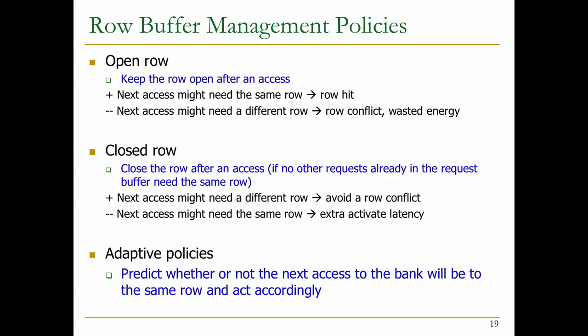Adaptive policies try to predict whether or not the next access to the bank will go to the same row and act accordingly. If the prediction is that it's going to the same row, they keep the row open; otherwise, they close the row. These are implemented in existing memory schedulers, though there's not a lot of literature that really talks about it. Many memory controller designers implement a timeout — if the row buffer is open for too long, they close it to save energy. A prediction-driven mechanism is much better.